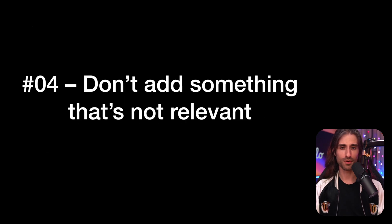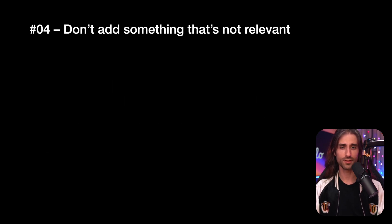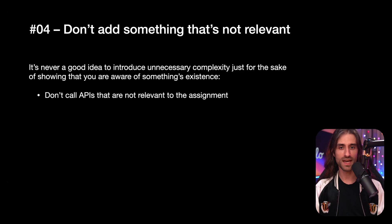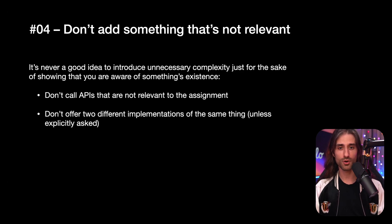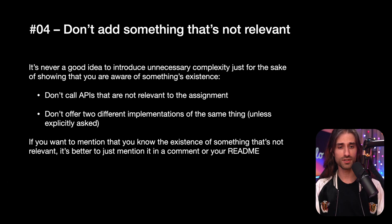Now let's move on to tip number four, which is: don't add something that's not relevant. It's never a good idea to introduce unnecessary complexity to your project just for the sake of showing that you are aware of something's existence. Don't call APIs that are not relevant to the assignment, or offer two different implementations of the same thing unless it's explicitly asked in the requirements. If you want to mention that you know of something that's not 100% relevant, it's fine to just mention it in a comment or in your readme — but implementing something irrelevant will give a very amateurish feeling to your project.